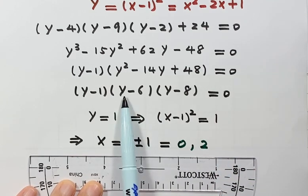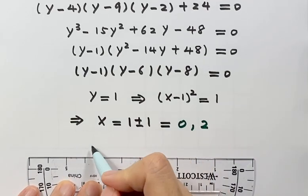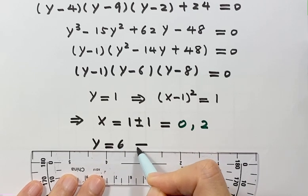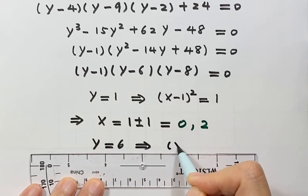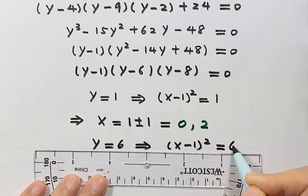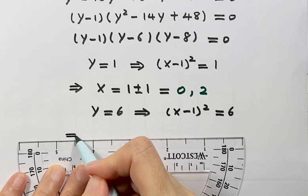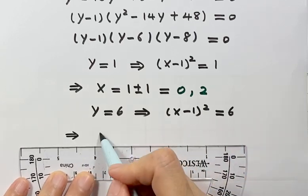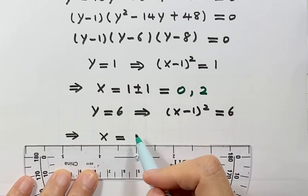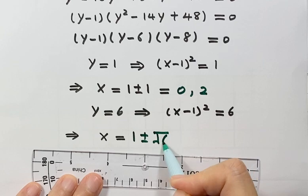The second solution for y is y equals 6. Here, x minus 1 squared equals 6. Solving this equation, we have x equals 1 plus or minus square root of 6.